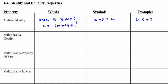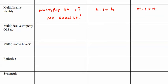Multiplicative identity. Multiply by 1. Again, no change. So B times 1 equals B. I like to use something exotic. Pi times 1 equals pi. Multiplicative property of 0. Multiply by 0. You get 0. So C times 0 equals 0. 5 times 0 equals 0.